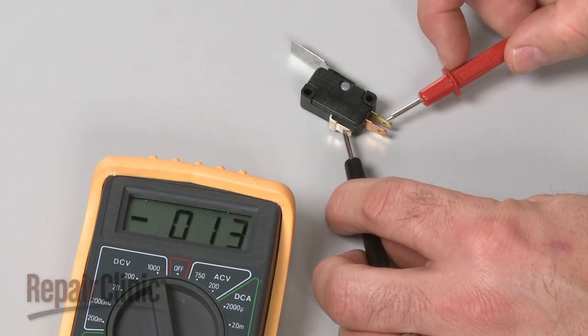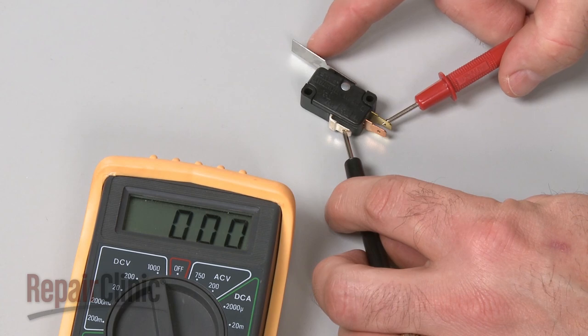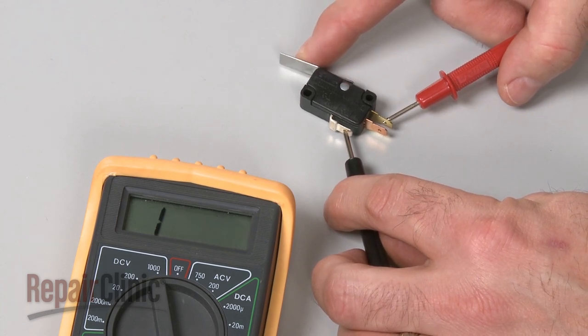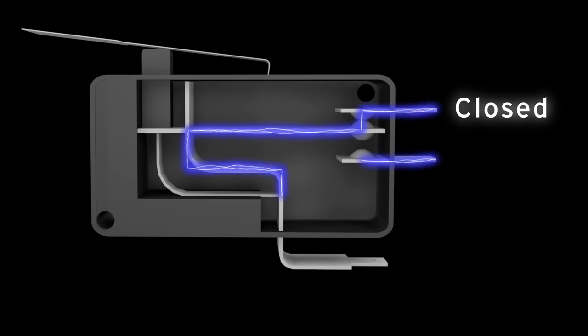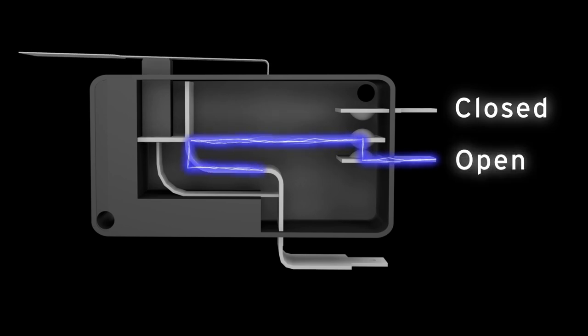Repeat the test for the normally closed terminal to determine if it has continuity. Keep in mind that the normally closed terminal should only provide continuity before the switch has been actuated. Likewise, the normally open terminal should only provide continuity after the switch has been actuated.